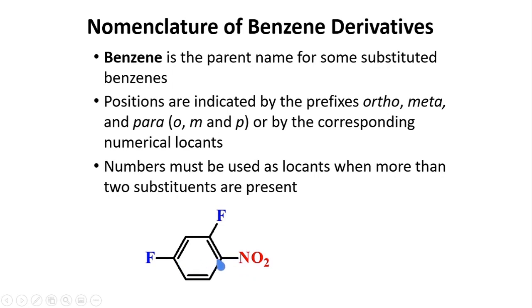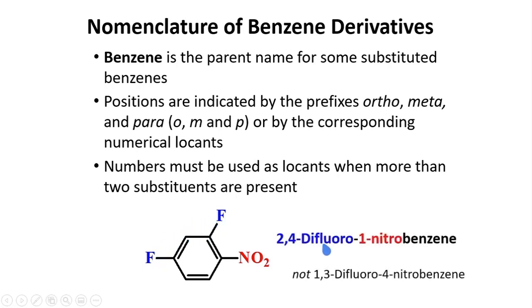So how do we name this compound with three substituents? We can use either 1,2,4 or 1,3,4 as locants. Following the rules already established for alkane nomenclature, the two fluorine atoms should be mentioned first. Thus the correct name is 2,4-difluoro-1-nitrobenzene, and not 1,3-difluoro-4-nitrobenzene.